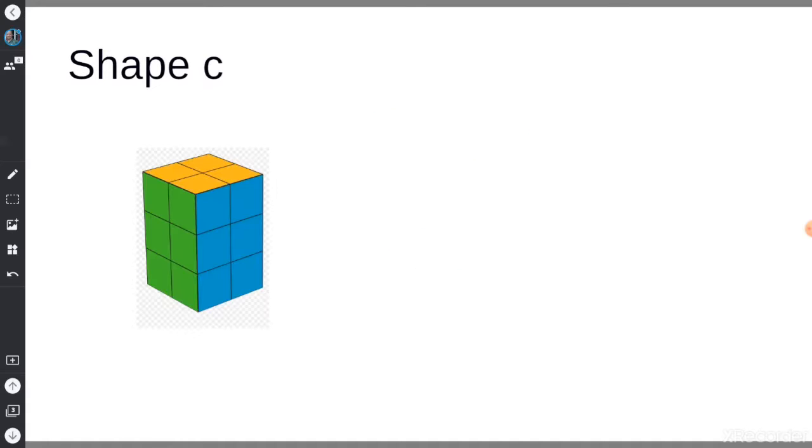Alright, finally we are going on to Shape C for your learn sheet. How many blocks are on the bottom layer of Shape C? Pause the video before I reveal the answer. You can see that this is two and this is two, so there are four. Two times two will give you four. Four blocks are on the bottom layer.